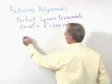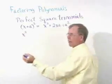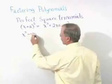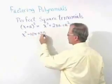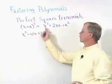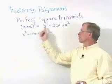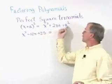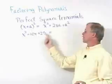For example, if we have x squared minus 10x plus 25, we notice that we have a first term squared, and we have a second term squared, and that second term is 5.